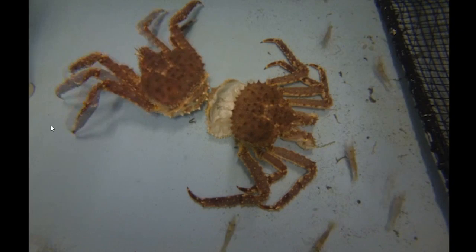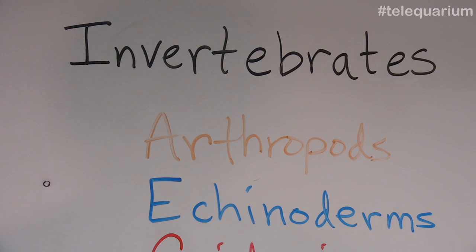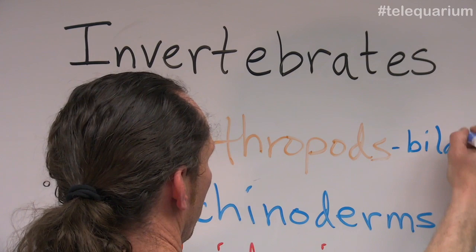So arthropods must molt in order to grow. They have an exoskeleton. You've probably noticed already that our crabs have a left and a right side — so that is going to be bilateral symmetry. Our arthropods are bilateral, meaning they have a left and a right side.